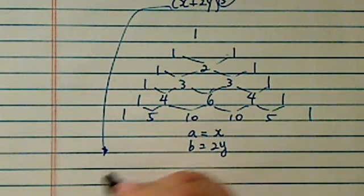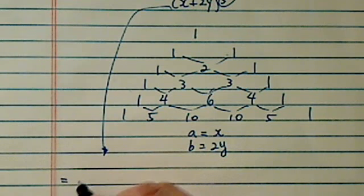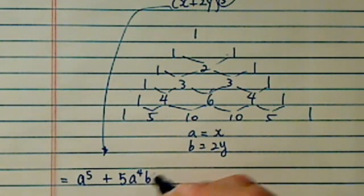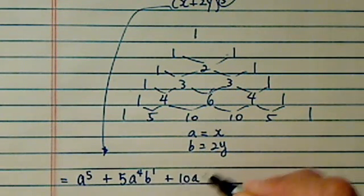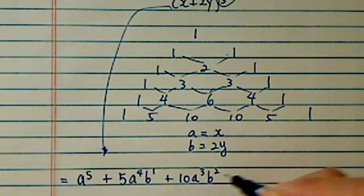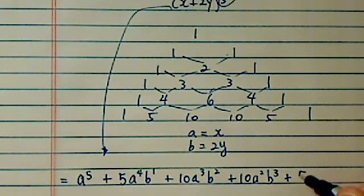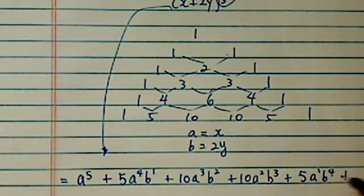So this whole thing is equal to 1 times a to the fifth. Let's write the first one down: plus 5 a to the 4, b to the 1, plus 10 a to the 3, b squared, plus 10 — then reversed — plus 5 a to the 1, b to the 4, and plus b to the fifth.